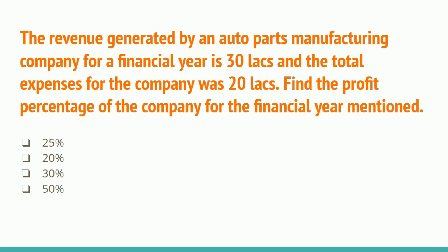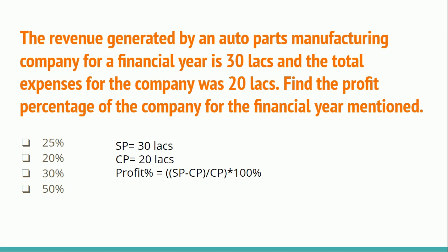As given in the question, the revenue generated by selling all their products is 30 lakhs — that is, selling price is 30 lakhs — and the total expenses were 20 lakhs, which is the cost price. The formula for profit percentage is: (Selling Price − Cost Price) / Cost Price × 100%. Putting all the data into the formula, the answer is 50%.